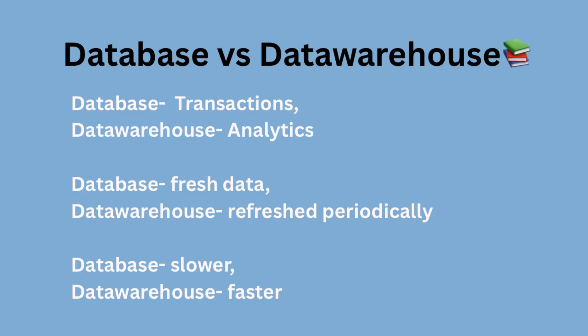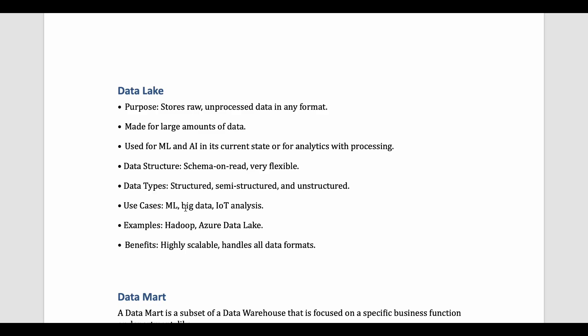The key differences between database and data warehouse: databases are designed for transactions, while data warehouses are designed for analytics and reporting. Database data is live, fresh, and detailed; data warehouse data is refreshed periodically and summarized. Databases work slowly when querying large amounts of data and can slow down transactional processes, but data warehouses don't interfere with other processes and are generally faster for queries.